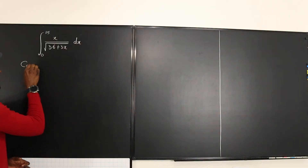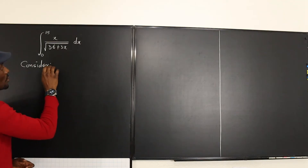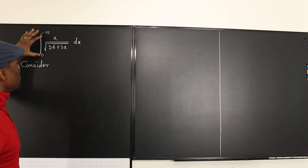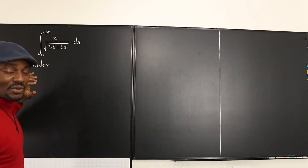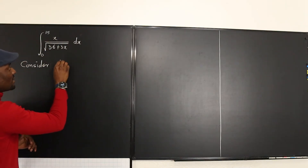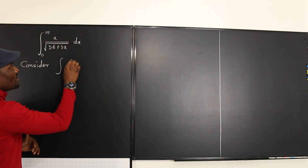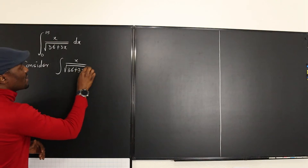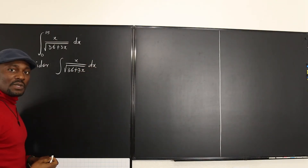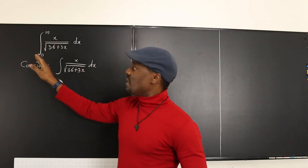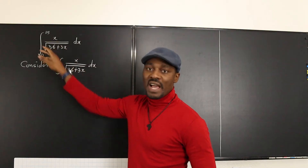We don't want to keep writing the boundaries 0 and 15 throughout, so let's consider the expression x over the square root of 36 plus 3x dx. This is what we want to deal with — we'll rewrite it without the boundaries to avoid repetition, and come back to them later.